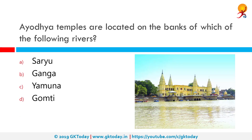Ayodhya temples are located on the banks of which of the following rivers? The correct answer is the Sarayu. The Sarayu river flows through the Indian states of Uttarakhand and Uttar Pradesh and is of ancient significance, finding mentions in the Vedas and the Ramayana. The Sarayu forms at the confluence of the Karnali and Mahakali rivers in Bahraich district.